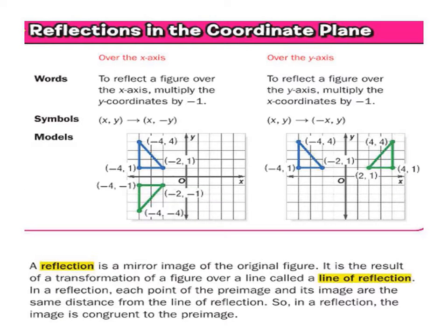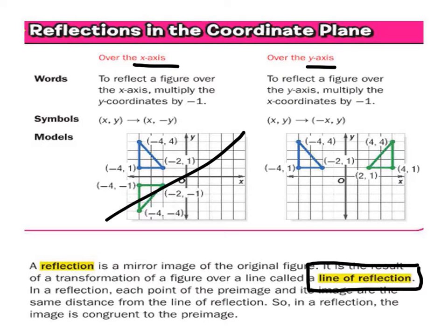This page in your book is saying the same thing. The line of reflection in both these cases is going to be either the x-axis or the y-axis. Next year, they'll give you a line and say reflect this triangle over that, and you'd get something kind of unusual.